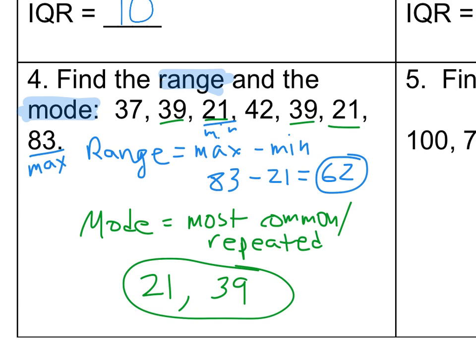So I notice that there are two numbers, 39 and 21, that are repeated more than once. They're both repeated twice. And then all the other numbers are just there one time. So 21 and 39 are my mode. They're my most common numbers.